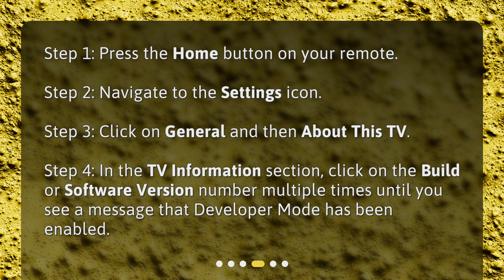Step 4: In the TV Information section, click on the Build or Software version number multiple times until you see a message that developer mode has been enabled.